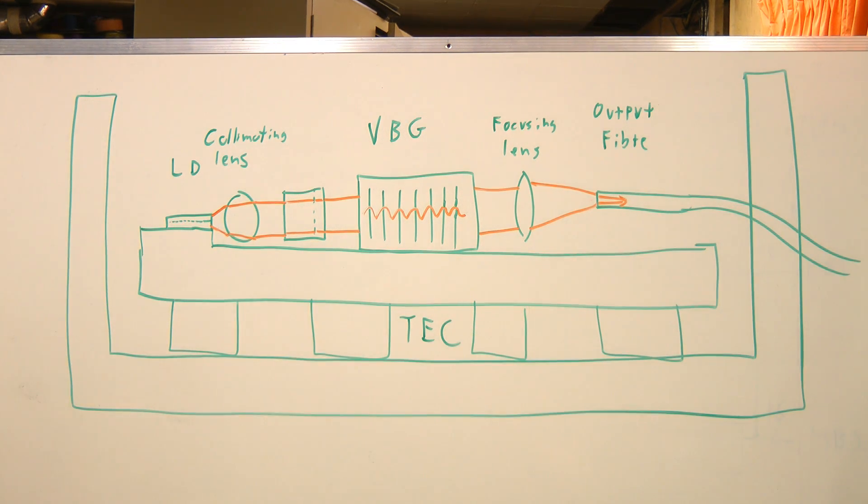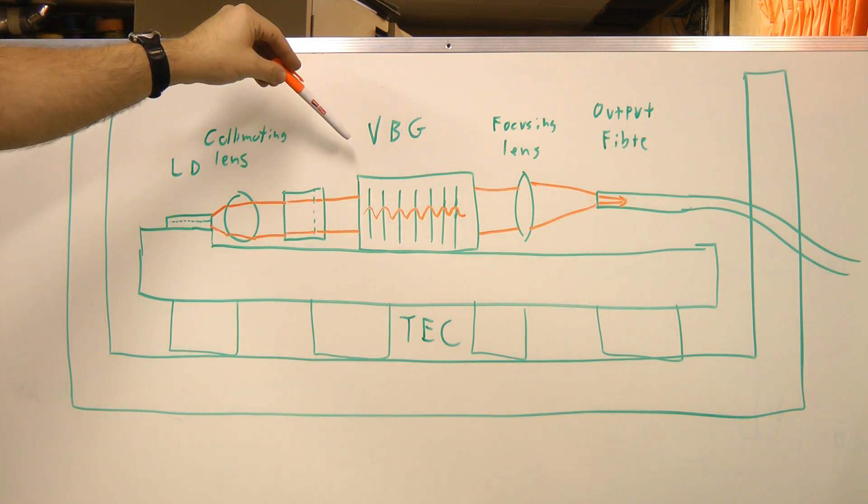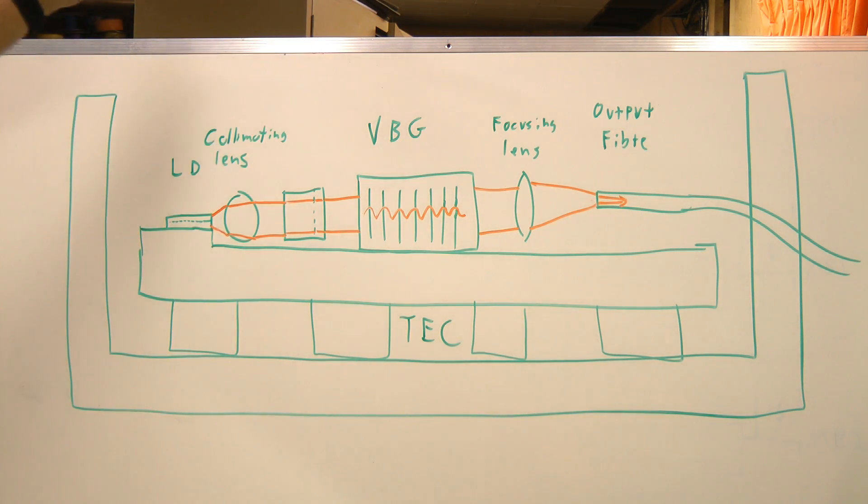There's a paper I found on these Volume Bragg Grating Stabilized Lasers produced by this manufacturer, PDLD. There's a link in the description that describes how these VBG elements were actually made. According to that paper, they're typically made of aluminosilicate glass, doped with silver and sensitized with cerium.